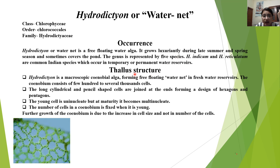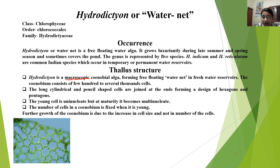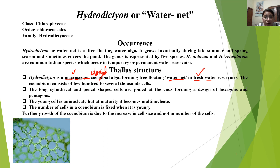Hydrodictyon is a macroscopic coenobial alga, which means it can easily be seen with your naked eye. We call it a macroscopic coenobial alga — it is a colonial form where many cells and structures remain together. It forms a free-floating water net in freshwater reservoirs. A coenobium consists of few hundred to several thousand cells.